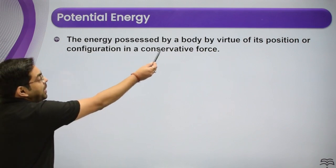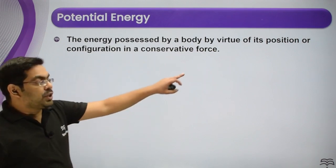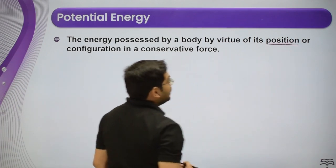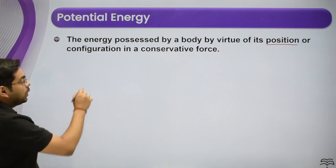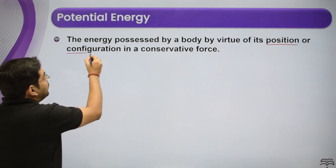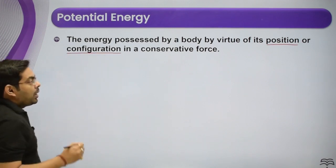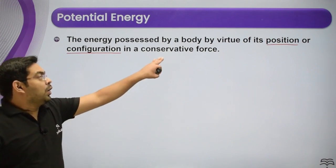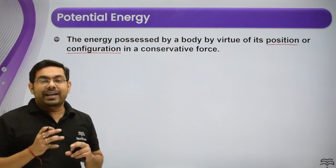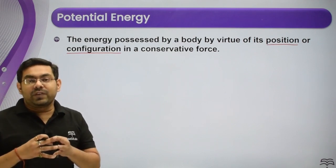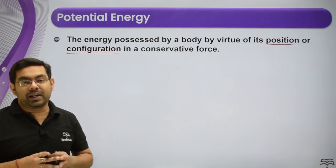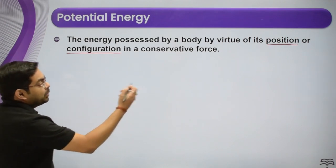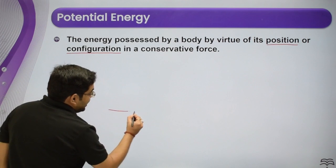Definition: energy possessed by a body by virtue of its position or configuration is called potential energy. It is defined only for conservative forces — if a conservative force is present, potential energy is defined for it.